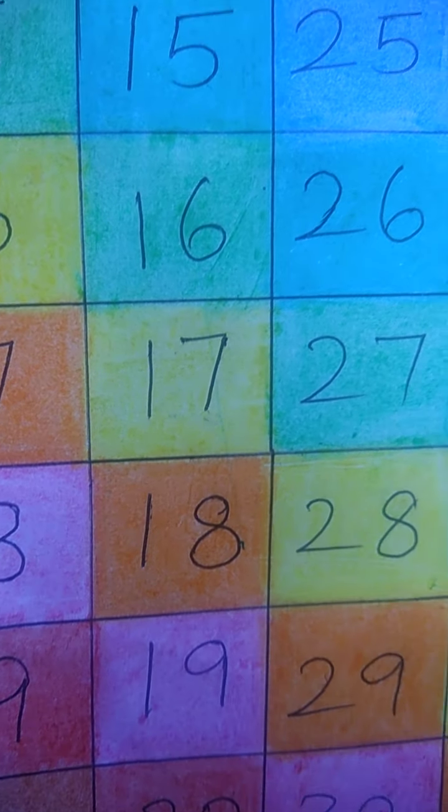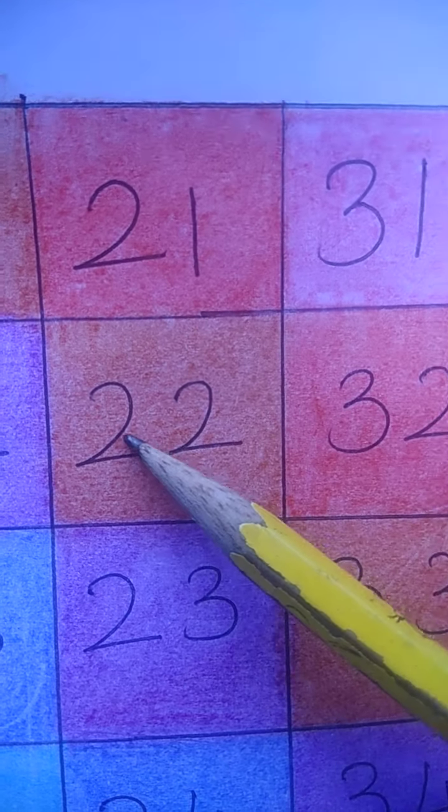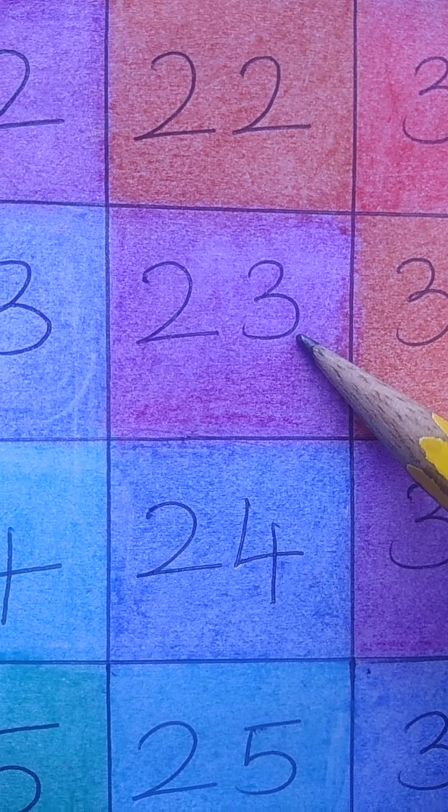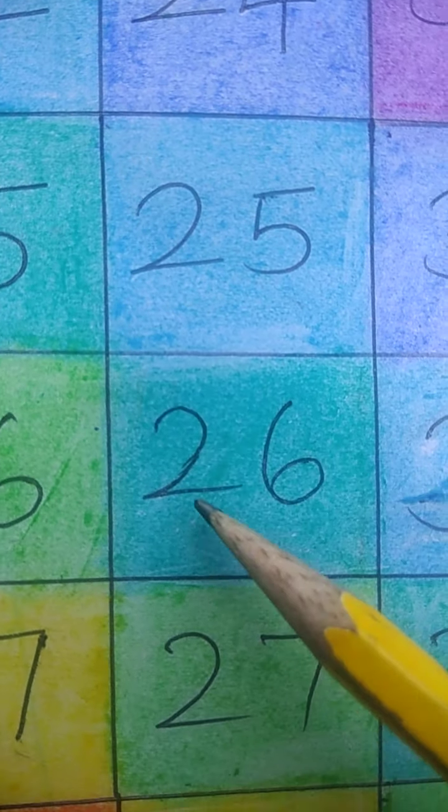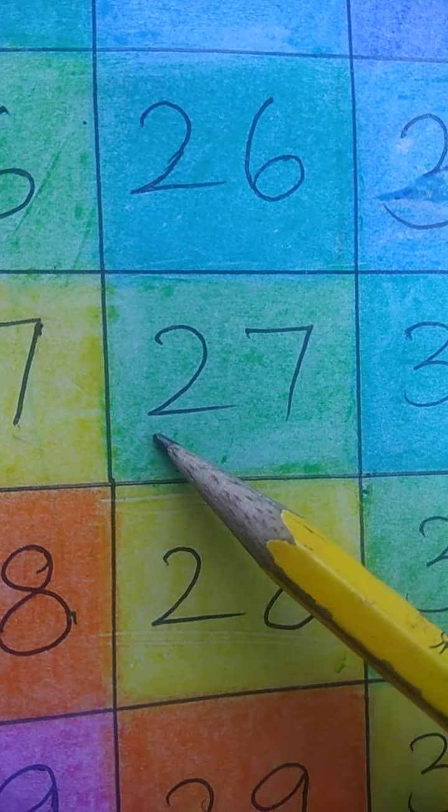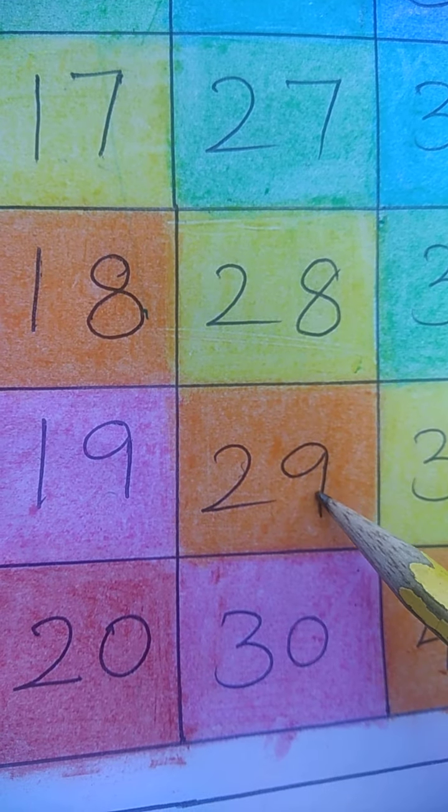2 0 20. 20 after 2 1 21, 2 2 22, 2 3 23, 2 4 24, 2 5 25, 2 6 26, 2 7 27, 2 8 28, 2 9 29.